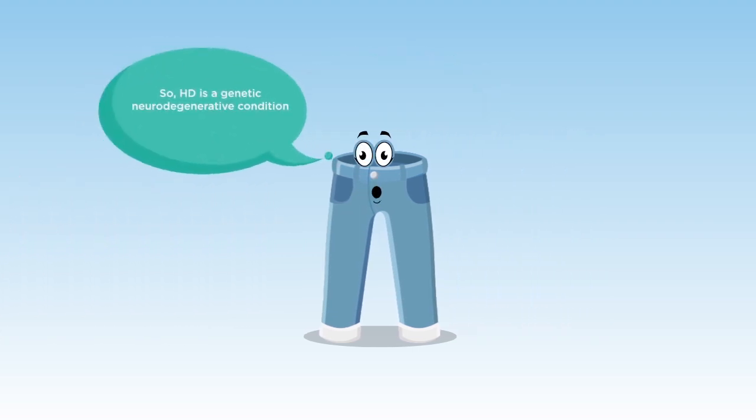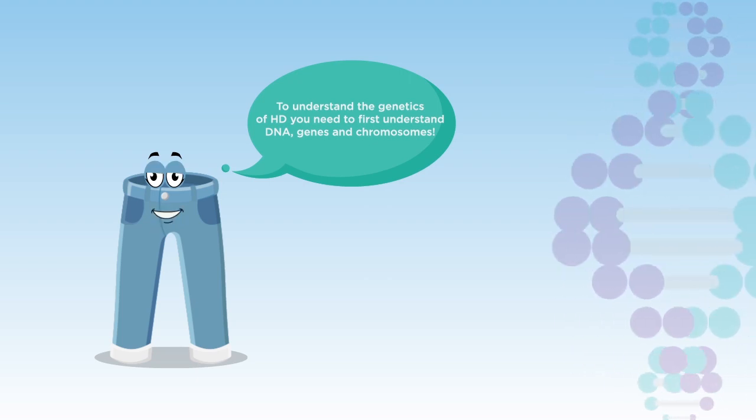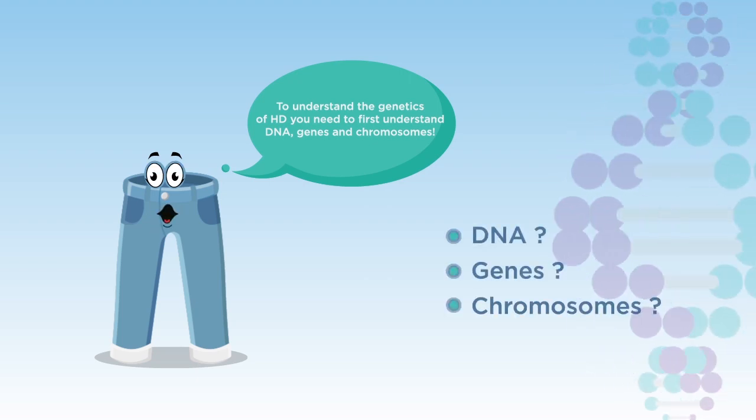So, HD is a genetic neurodegenerative condition, which means it can be inherited through a family. To understand the genetics of HD, you need to first understand DNA, genes, and chromosomes.